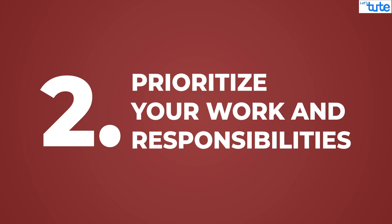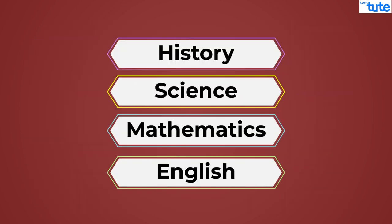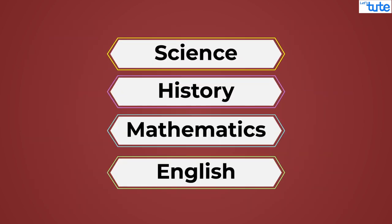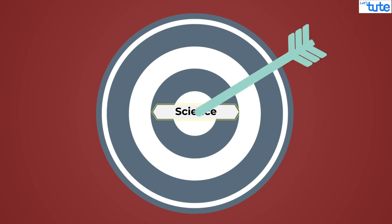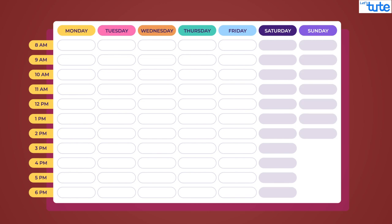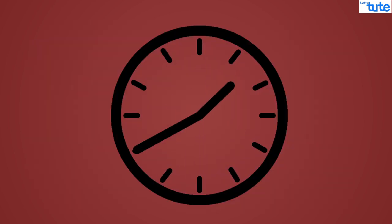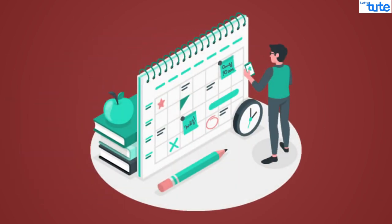Point number two: prioritize your work and responsibilities. Try attractively filling in the details so that you don't get bored while looking at the timetable. Prioritize your subjects accordingly. Your main goal should be finishing the subjects which you find difficult. If possible, try to make a separate timetable for the weekend, as more time is available on weekends compared to normal days. Also make sure that you keep exceptions for days like holidays and birthdays.